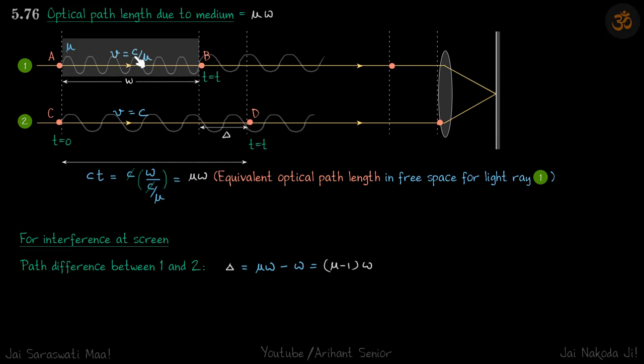Inside a medium, the velocity of light becomes c/μ — outside it is more, but inside the medium it is less. The frequency of light does not change when it goes into the medium. Since v = fλ and f is constant, v is proportional to λ. So if v reduces, λ will also reduce, meaning the wavefronts will become closer together.